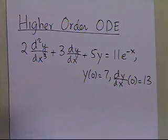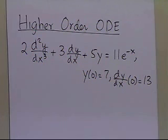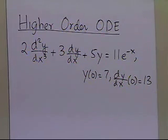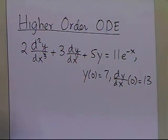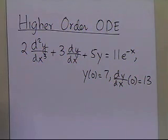All the Runge-Kutta second-order methods, fourth-order methods, and Euler's methods — the things we have talked about for solving initial value ordinary differential equations — we find that we are only able to solve first-order differential equations by those methods.